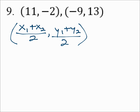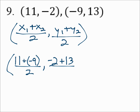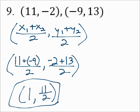Number 9: find the midpoint. Use the midpoint formula. X1 is 11 plus X2 which is negative 9, and Y1 is negative 2 plus Y2 which is 13. Remember, for the midpoint you add and then divide by 2 — it's like finding the average. 11 plus negative 9 is 2, divided by 2 is 1. Negative 2 plus 13 is 11, divided by 2 is 11 halves. So the midpoint is (1, 11/2).